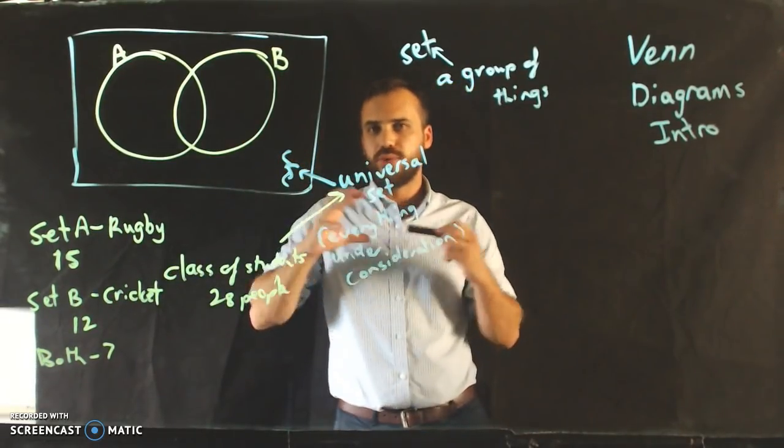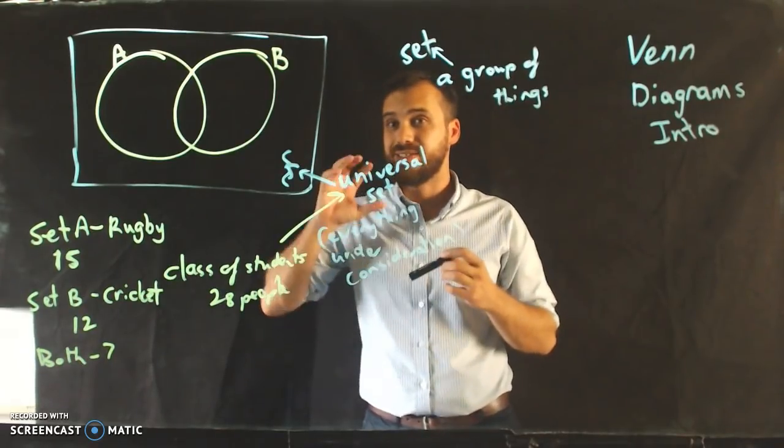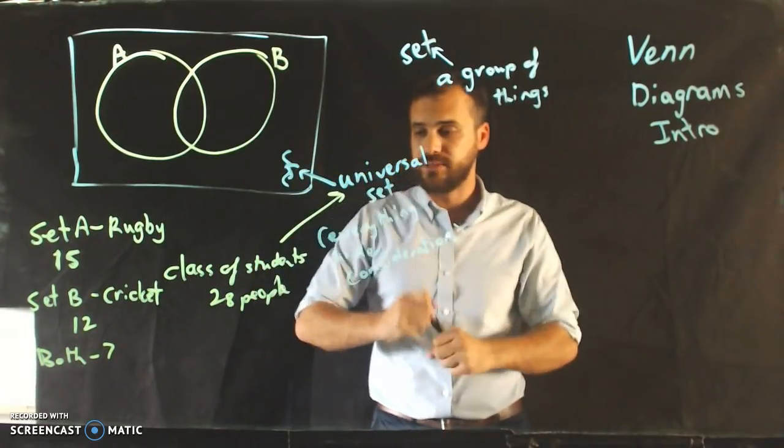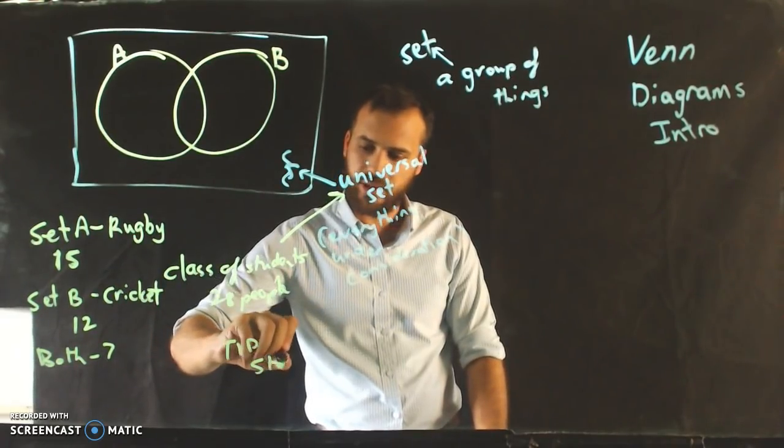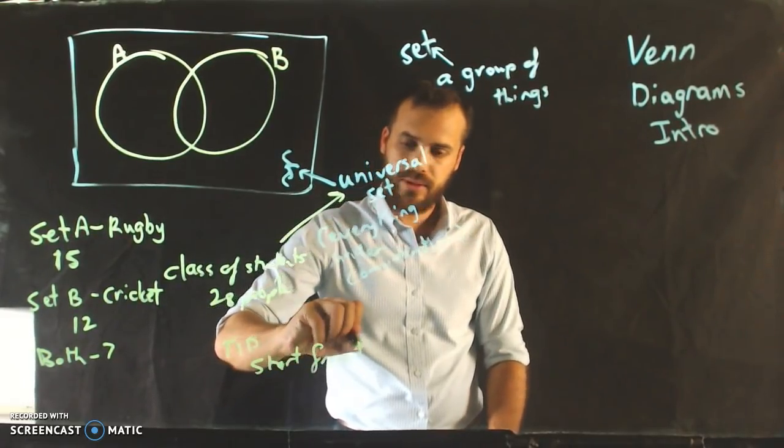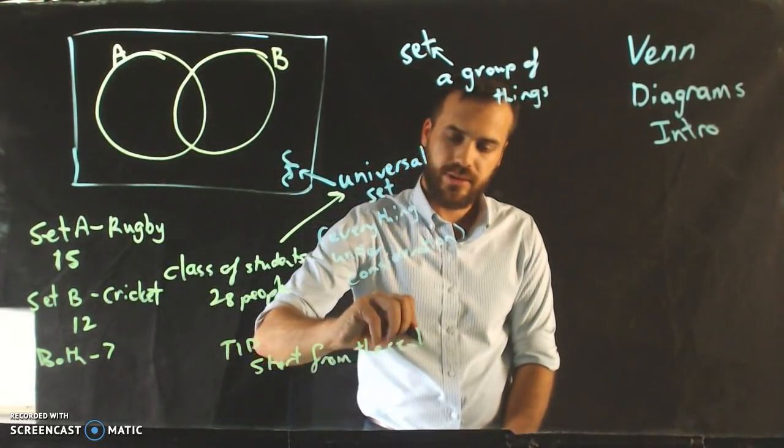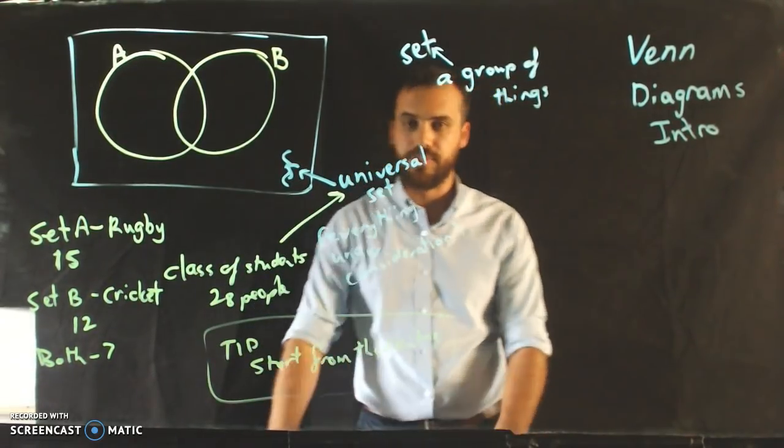Now, I'm going to give you a real Venn diagram tip here. And that is start from the centre. Tip. This isn't really like official stuff, but this helps you. Tip, start from the centre. And then start working your way out from the centre.